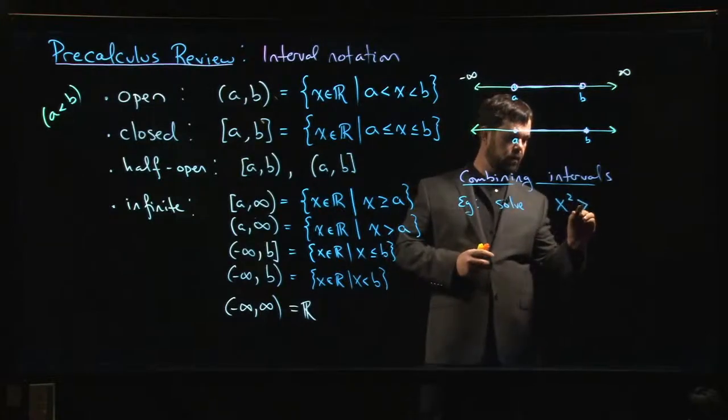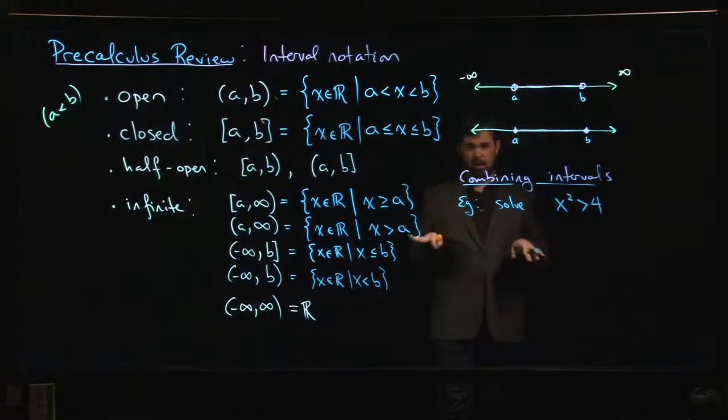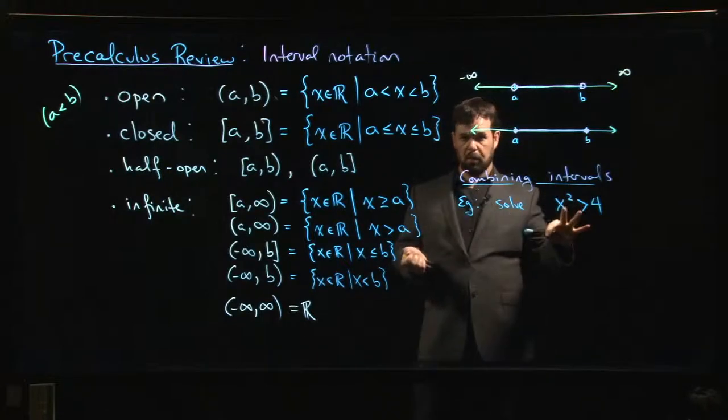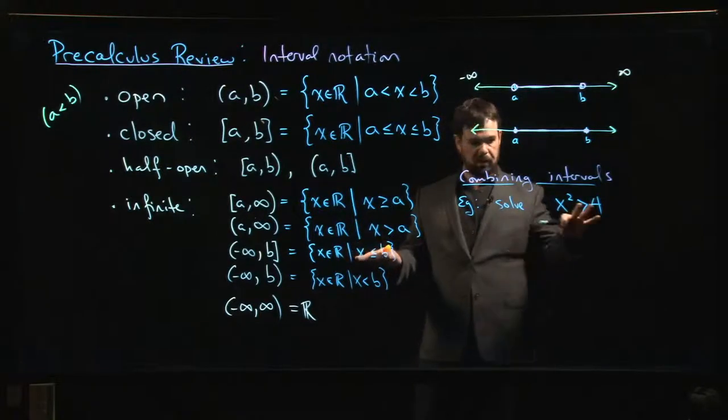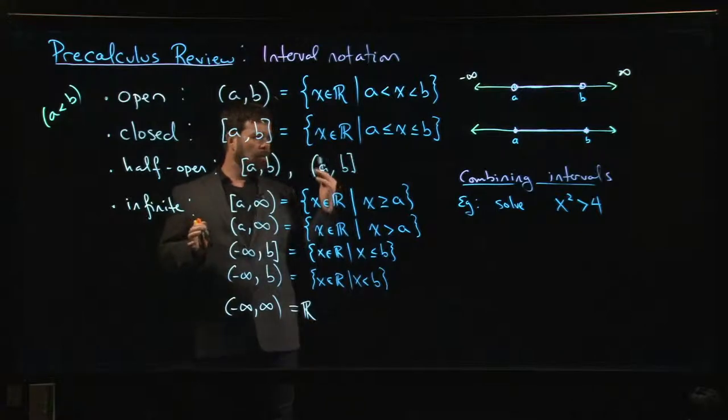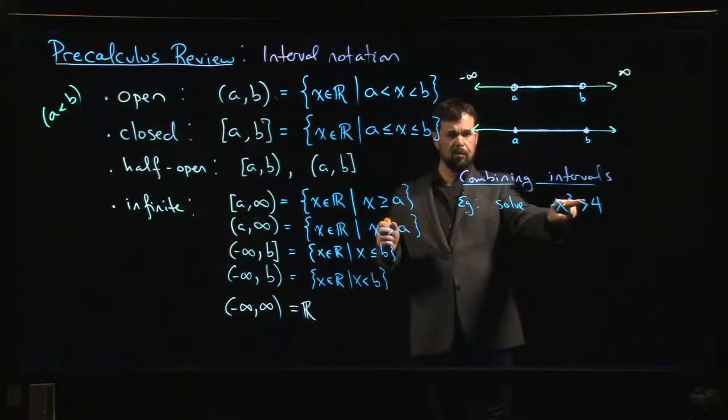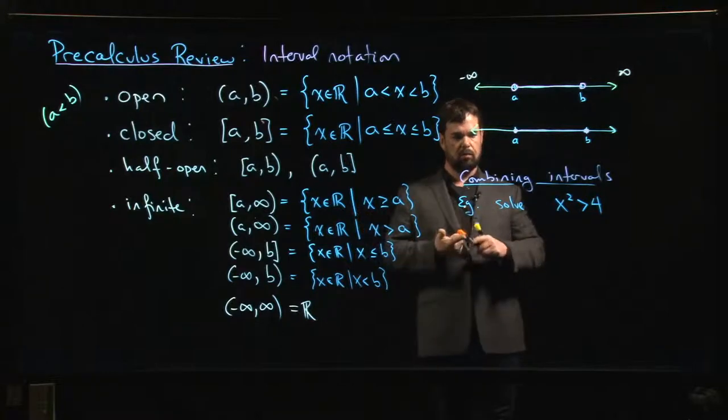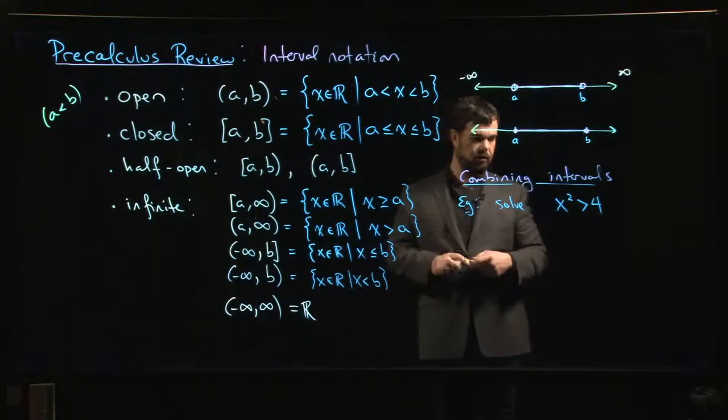x squared is bigger than 4. You think about what numbers you can write down whose square is bigger than 4. We'll introduce formal techniques for this later when we talk about polynomials and solving polynomial inequalities, but for now let's just think about it. What are some numbers whose square is bigger than 4? Maybe we start with thinking about numbers whose square equals 4. 2 squared is 4, so anything bigger than 2, if I square it, I'm going to get something bigger than 4.